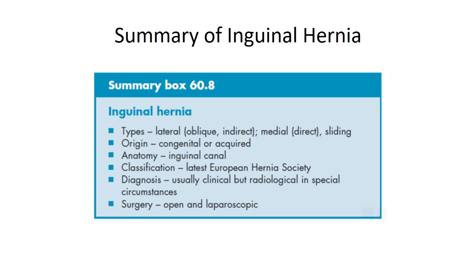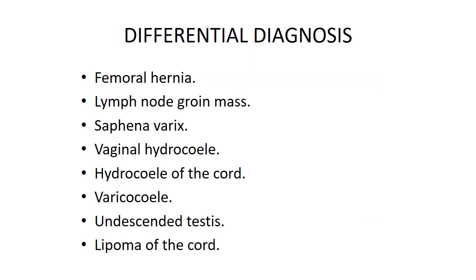Summary: anatomy — inguinal canal; classification — latest European Hernia Society; diagnosis — usually clinical but radiological in special circumstances; surgery — open and laparoscopic. Differential diagnosis includes: femoral hernia, lymph node groin mass, sapheno-varix, vaginal hydrocele, hydrocele of the cord, varicocele, undescended testis, and lipoma of the cord.